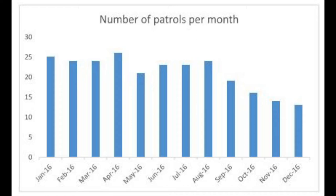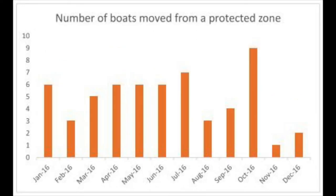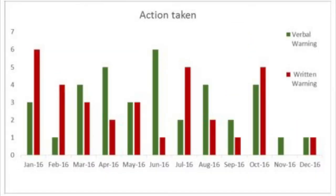There are provincial elections taking place, so we can't re-elect the Community Fisheries Committee until those are done — a bit of a blockage at the moment. We're trying to see if other communities can fill that gap. The next chart shows how many boats were moved from a protected zone — boats found in a conservation area were told to move out. The final chart shows the number of verbal versus written warnings over the year, with quite a large number of written warnings being issued.